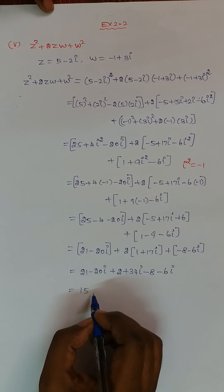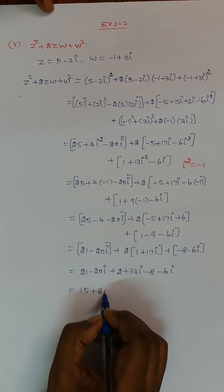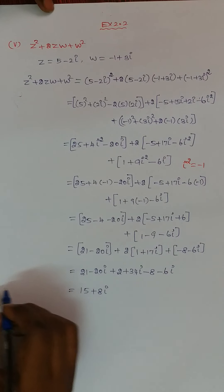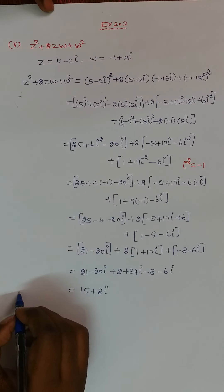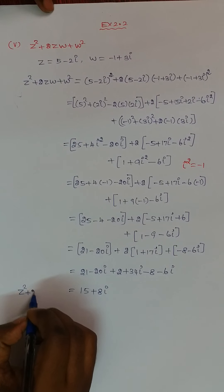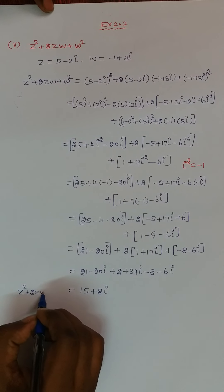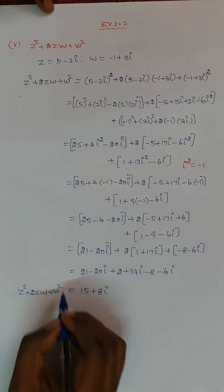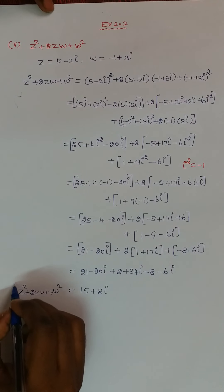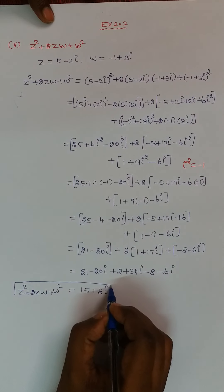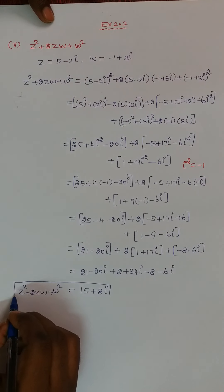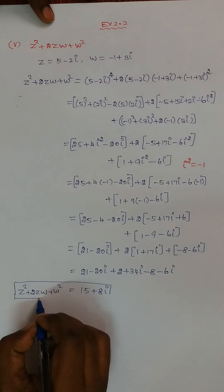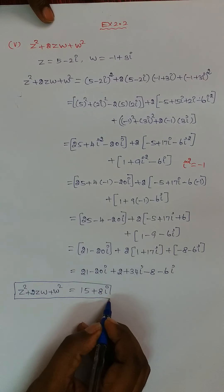That is equal to 8i. Therefore Z² + 2ZW + W² equals 15 + 8i. This is the value of the sum. Thank you, children.